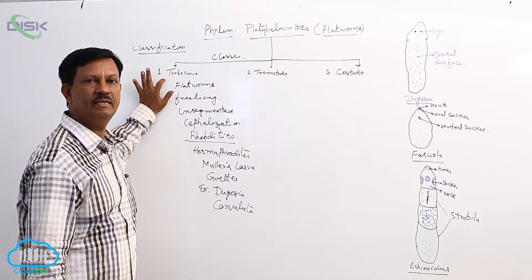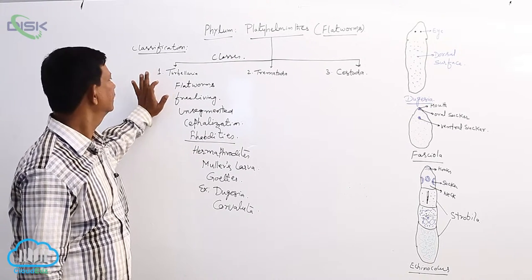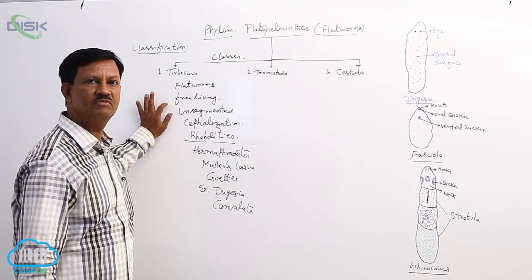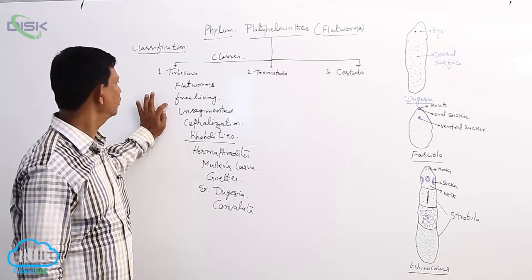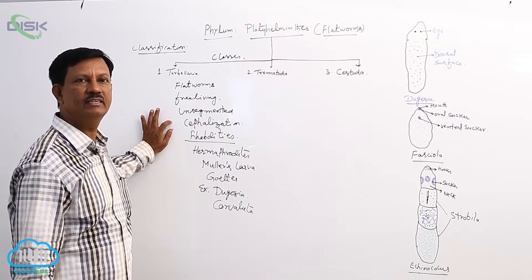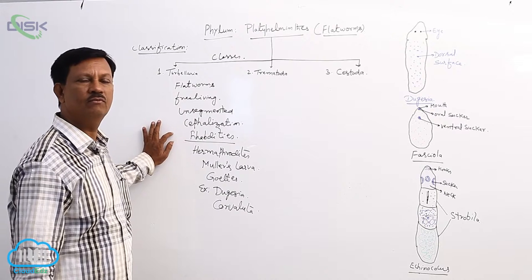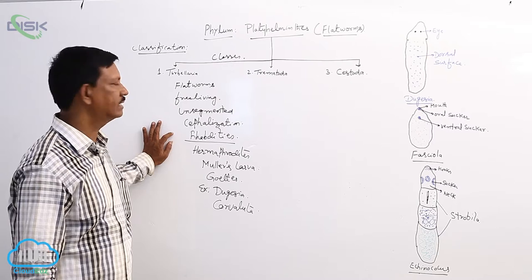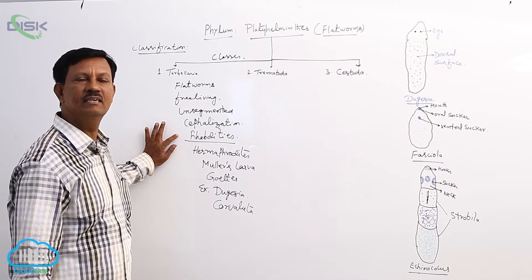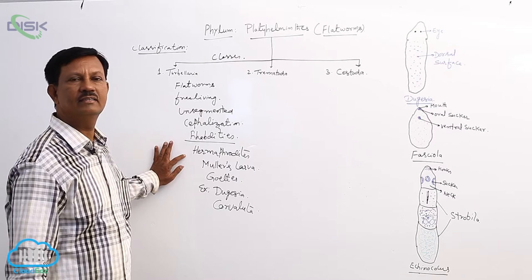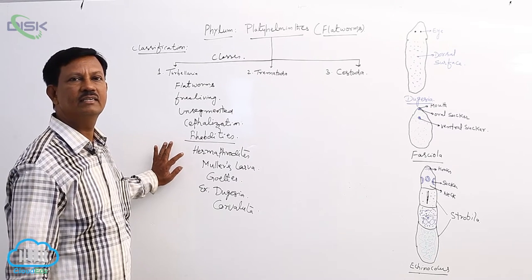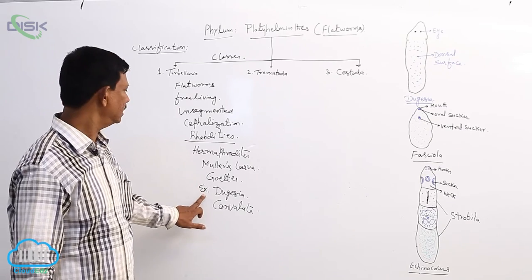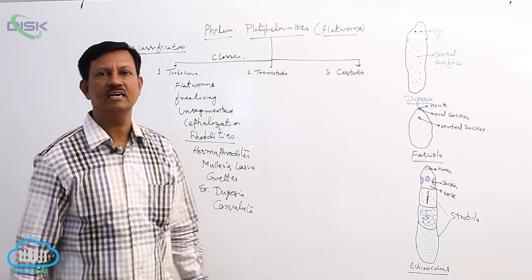These are the main important characters. They are commonly known as flatworms. They are mostly free-living and found in moist soil. The body is not divided into segments. In the body wall, ciliated epidermis contains some special rod-like structures known as rhabdites. They secrete mucus substance and they are hermaphroditic animals. Development includes Muller's larvae or Goet's larvae. Examples are Dugesia and Convoluta.